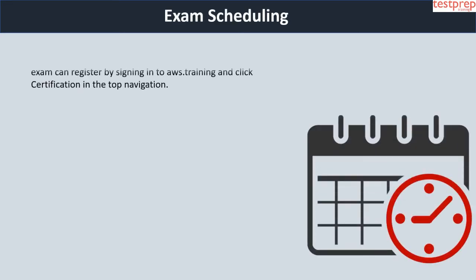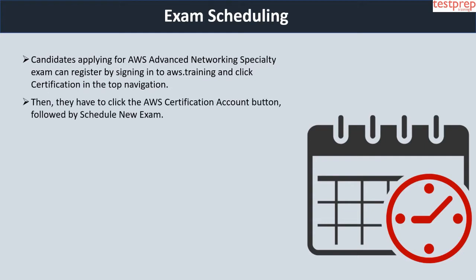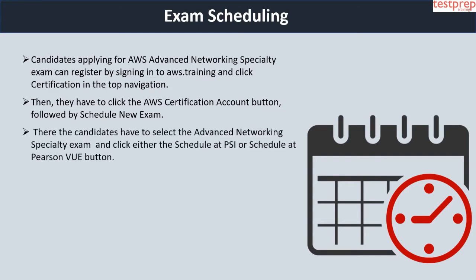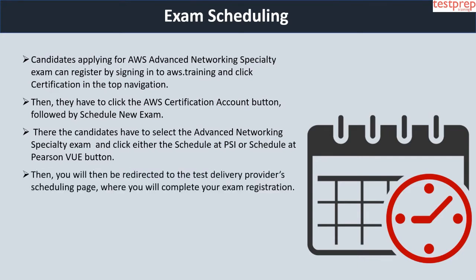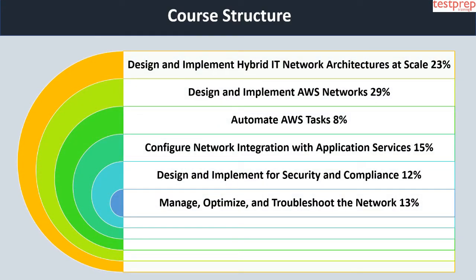The validity of the AWS certification is three years. Now we will discuss about exam scheduling. Candidates applying for the AWS Advanced Networking Specialty exam can register by signing into AWS Doc Training, clicking Certification in the top navigation, then clicking the AWS Certification Account button, followed by Schedule New Exam. There, candidates have to select the Advanced Networking Specialty exam and click either the Schedule at PSI or Schedule at Pearson VUE button. You will then be redirected to the test delivery provider's scheduling page to complete your exam registration.